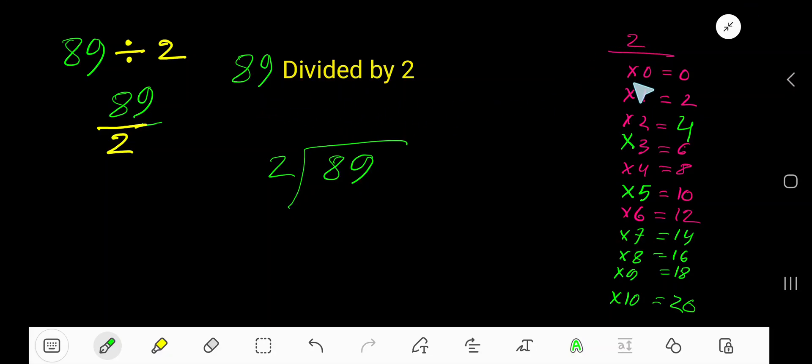89 divided by 2. 2 times 0 is 0, 2 times 1 is 2, 2 times 2 is 4, 2 times 3 is 6. To find the multiplication table of 2, just add 2 to the previous step: 0 plus 2 is 2, 2 plus 2 is 4.